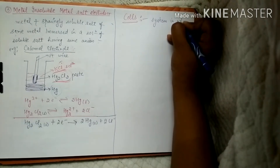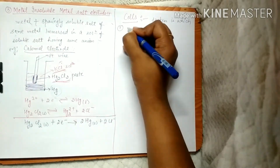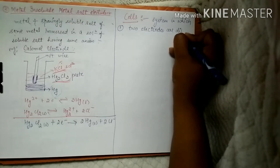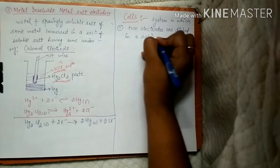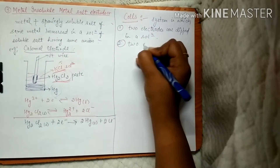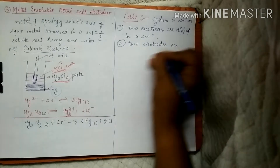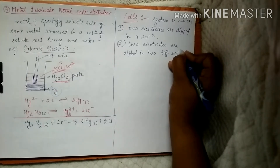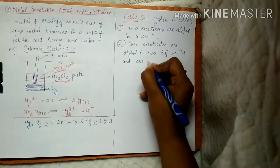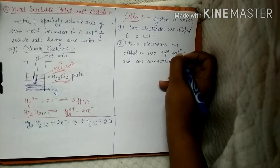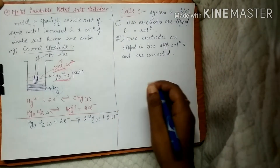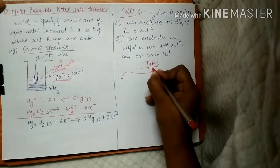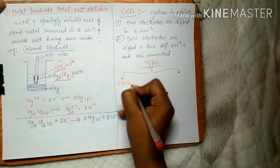Now we are going to discuss about cells. Cells are basically systems in which either two electrodes are dipped in a solution, or two electrodes are dipped in two different solutions which are connected to each other.